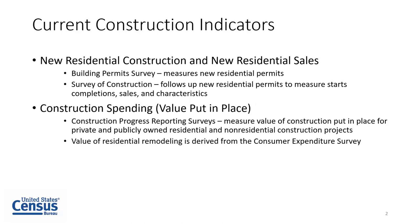I want to start with a brief overview of our current construction indicators. There are three Census Bureau principal federal economic indicators that measure construction. New residential construction, commonly referred to as housing starts, includes building permits, housing starts, and housing completions. New residential sales, commonly referred to as new home sales, provides measures related to sales of single-family homes, including numbers sold, median and average sales prices, and for-sale inventory. Construction spending, commonly referred to as value of construction put in place, or VIP, provides measures of total spending on private and public residential and non-residential construction. To produce these indicators, we currently use several monthly surveys heavily reliant on field interviews and paper collection, which limits our ability to meet data users' needs for more timely and granular data.